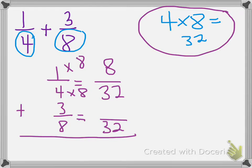And now I'm going to drop down to my three-eighths, and I'm going to ask a similar question. What times eight gives me 32? And it is four. And so if I multiply the denominator by four, I also need to multiply my numerator by four. And three times four is 12.